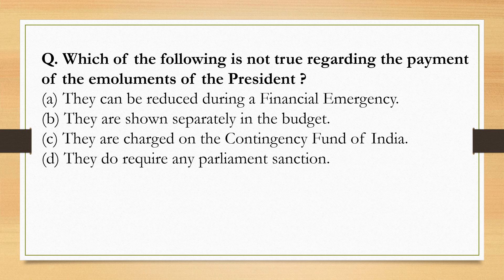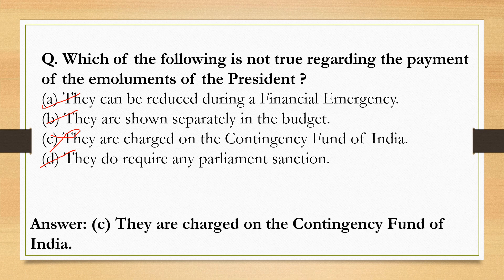Which of the following is not true regarding the payment of emoluments of the President? The true statements are: they can be reduced during a financial emergency; they are shown separately in the budget; they do not require Parliament sanction — actually, according to Article 112, they do require Parliament sanction. Most importantly, they are charged on the Consolidated Fund of India, not the Contingency Fund. So the correct option is Option C.